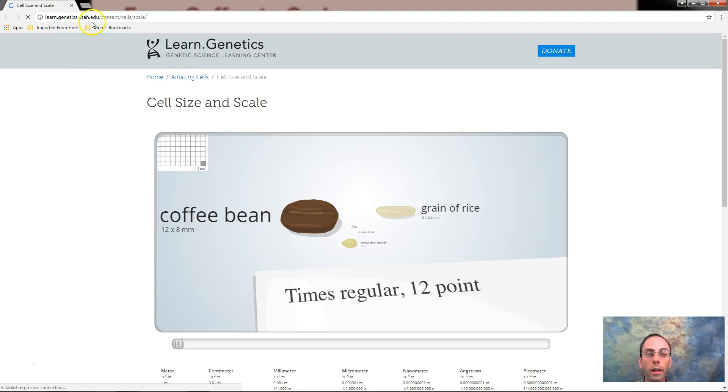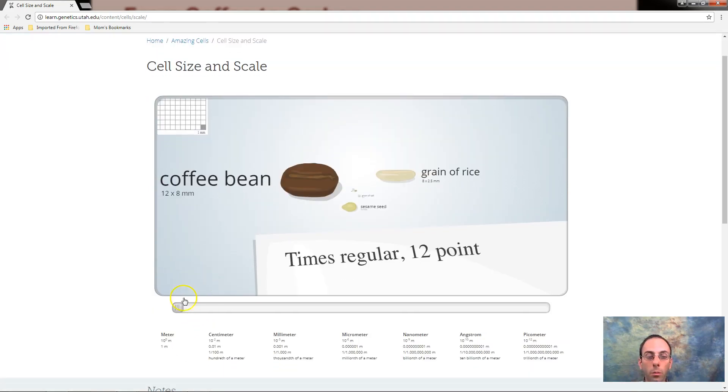Go to learn.genetics.utah.edu. It gives you this idea of a coffee bean and we see these little tiny things here in a grain of rice. Well down here there's a little sliding scale here.